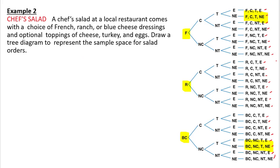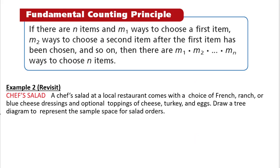There's an easier way. This is a really long way to write it out. The fundamental counting principle says: if there are n items, m1 items, m2 items, and so on, all you have to do is multiply each number of items together — the number of options you have for each item.